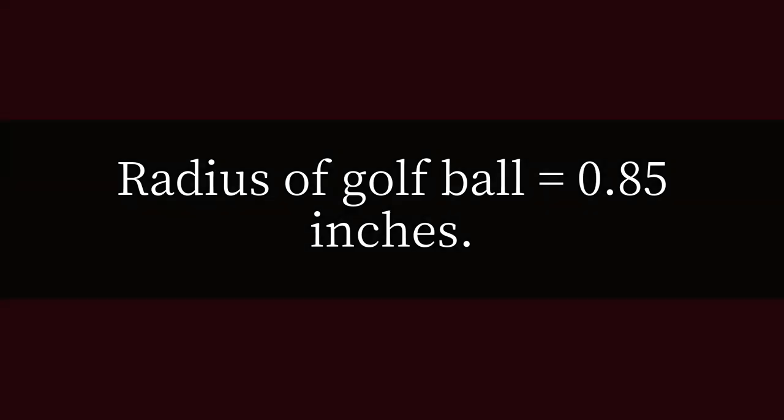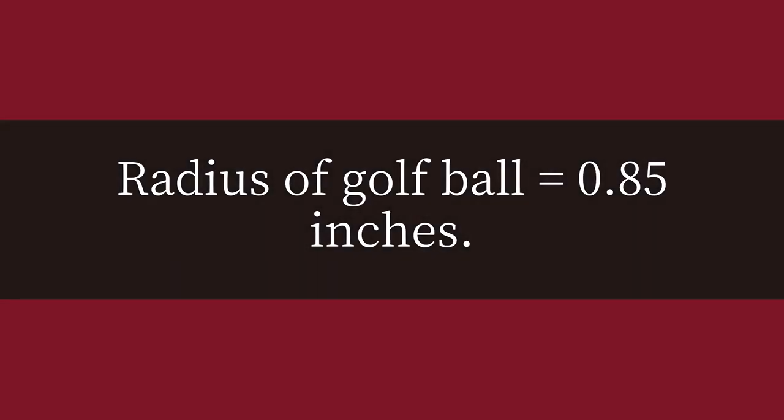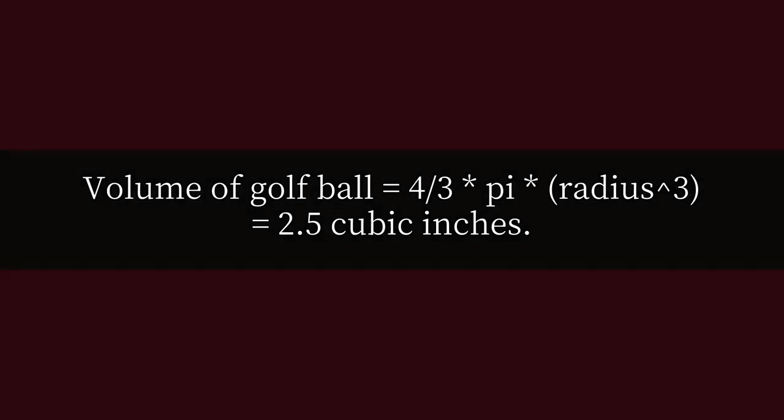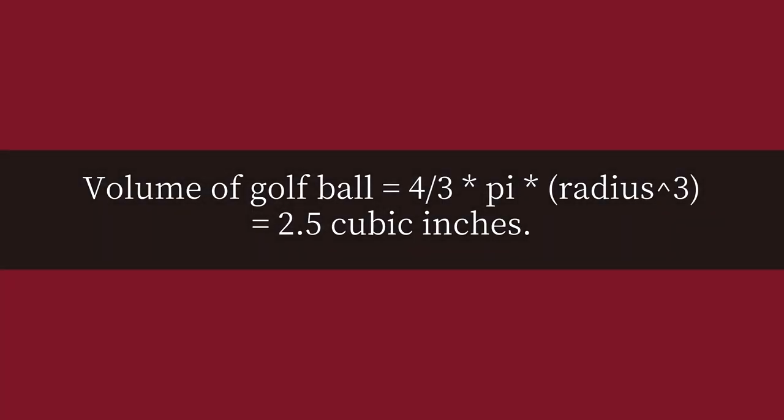The radius of a golf ball equals 0.85 inches. The volume of a golf ball equals (4/3) × π × radius³ = 2.5 cubic inches.